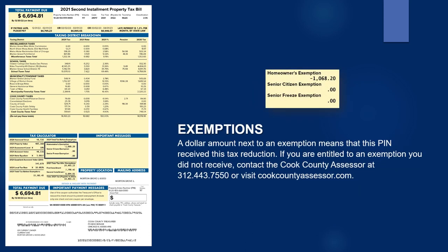A dollar amount next to an exemption means that this PIN received its tax reduction. If you are entitled to an exemption you did not receive, contact the Assessor.